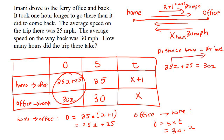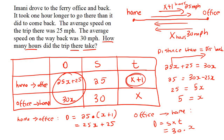Solving, x equals 5. But don't stop there — we need to make sure we've answered the question. The question asks how many hours did the trip there take, which is the home-to-office journey. What we've just calculated is the return time x. So if x is 5, then the trip there is 5 plus 1, which is 6. Therefore the final answer is 6 hours.